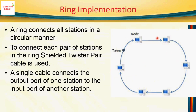The nodes, or stations, in a token ring are connected in a circular manner. To connect each pair of stations in the ring, STP — shielded twisted pair cable — is used. Each station has a separate cable, and a single cable connects the output port of one station to the input port of another station.